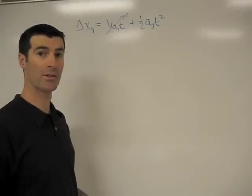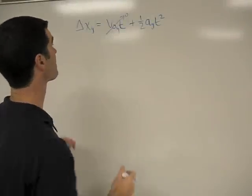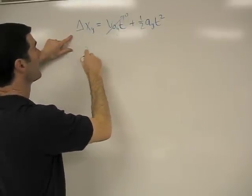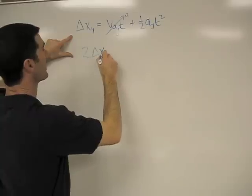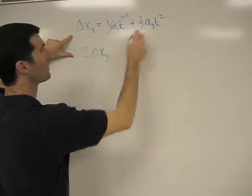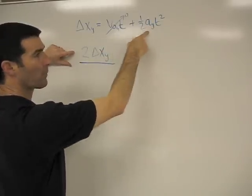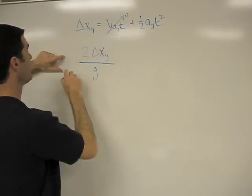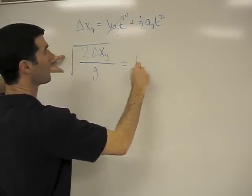So we're going to rearrange this equation and solve for t. So bring my one-half over and I have 2 delta x in the y-direction all over a sub y. We know what a sub y is, that's going to be the acceleration due to gravity, little g. Take the square root of that and that will give us t.